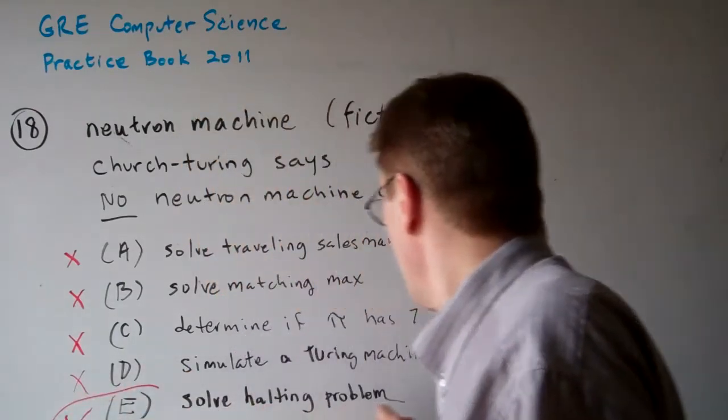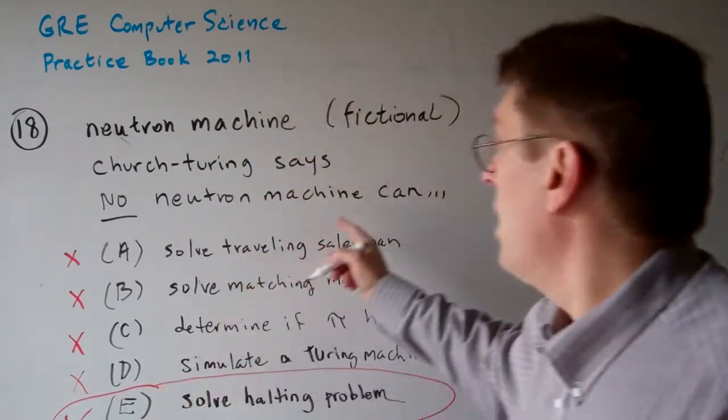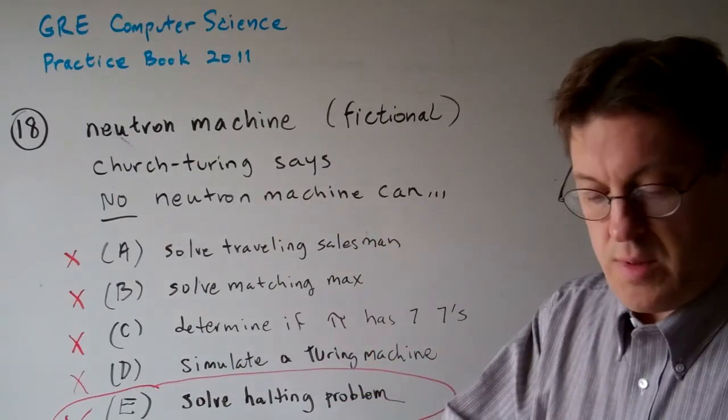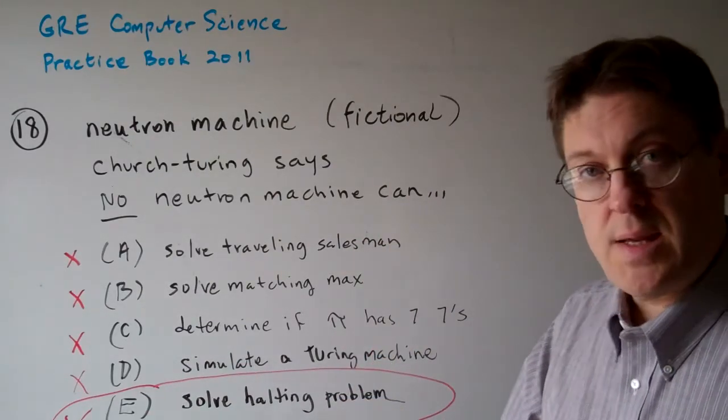So the answer, check out Church-Turing, but the answer to question 18 is E.